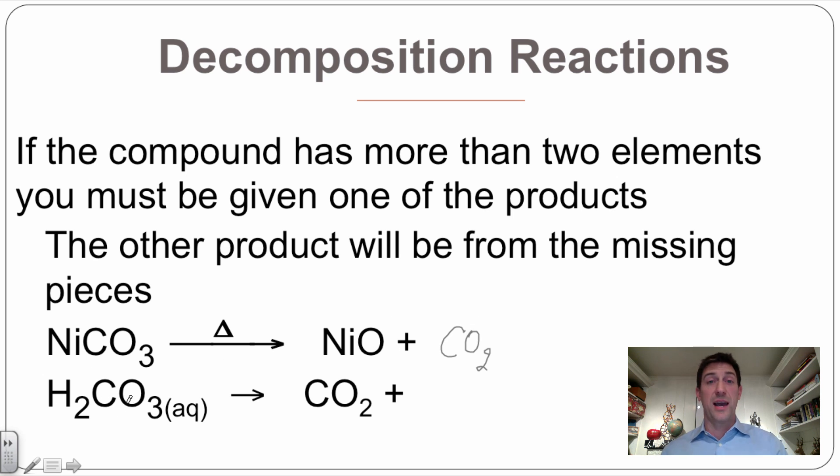Then I've got carbonic acid, which is what we talked about earlier, that forms when carbon dioxide is dissolved in water, makes carbonic acid. This is something that's happening very rapidly in the oceans right now, but it can also go the reverse direction and decompose into carbon dioxide and H₂O. So these are our decomposition reactions.